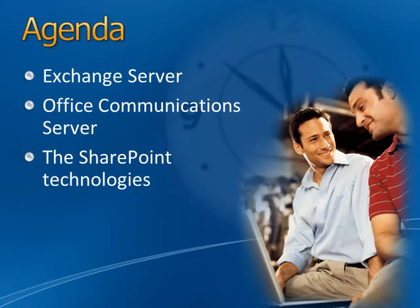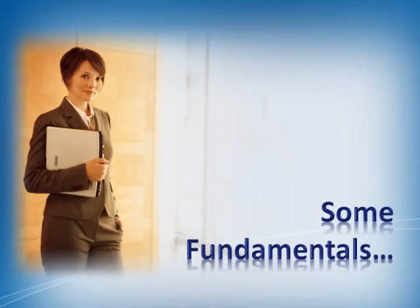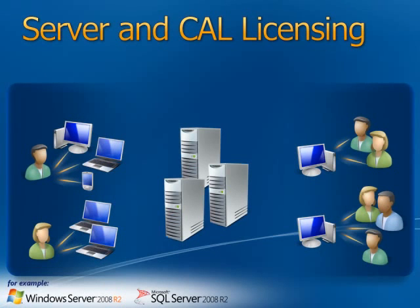But let's first have a quick recap on some of the licensing fundamentals. Let's take a look at Server and CAL licensing. This is a licensing model that is used by most of our server applications. Taking Windows Server as an example, supposing we have three servers in our organisation that are running Windows Server. To license this properly, we would need to purchase three Windows Server licenses, one for each server. We then need to license the end users or devices to access the services of that server, and this would be done using a Client Access License or CAL.